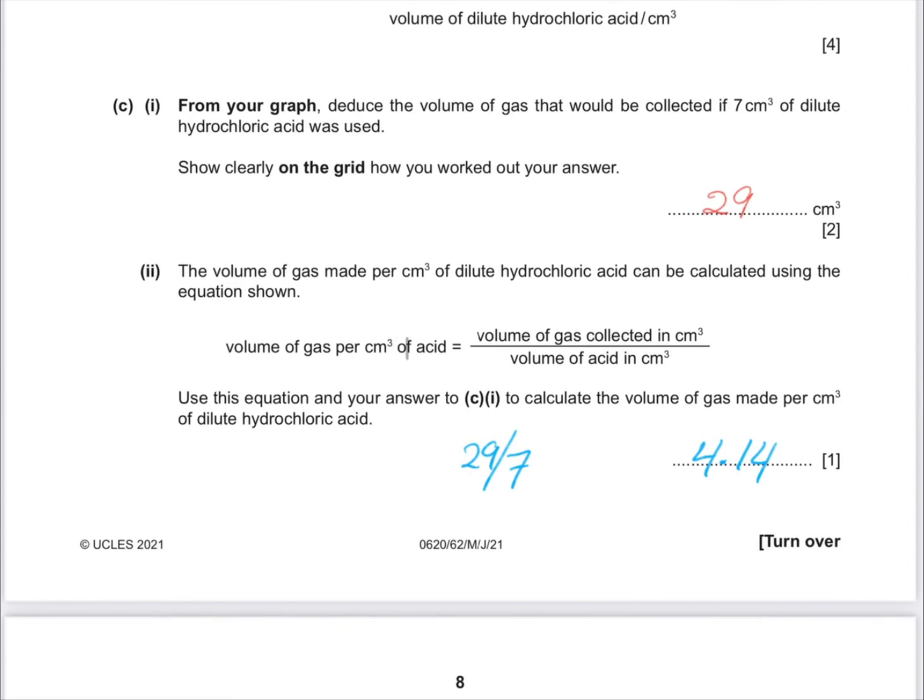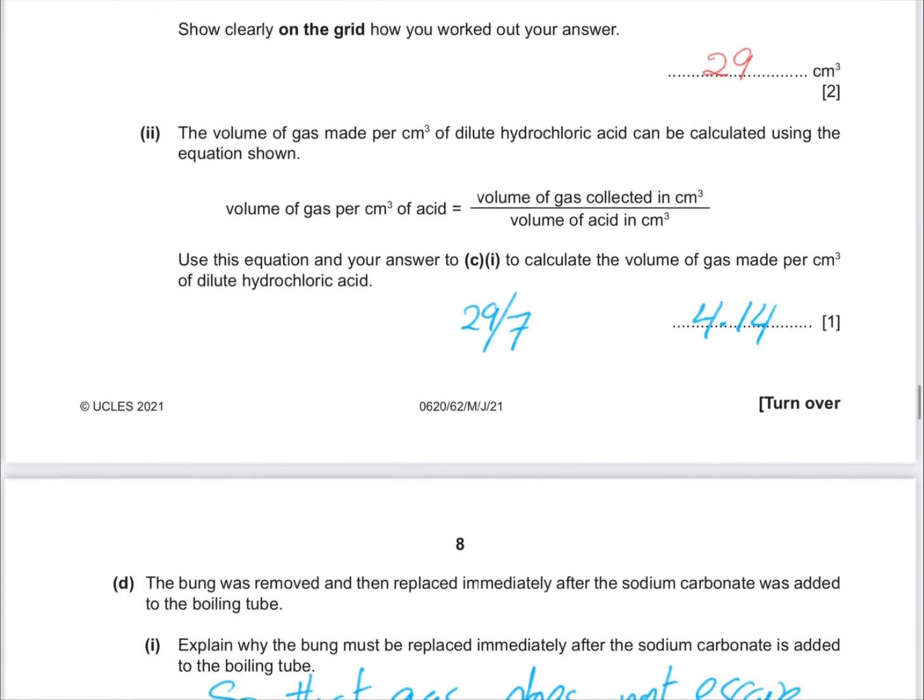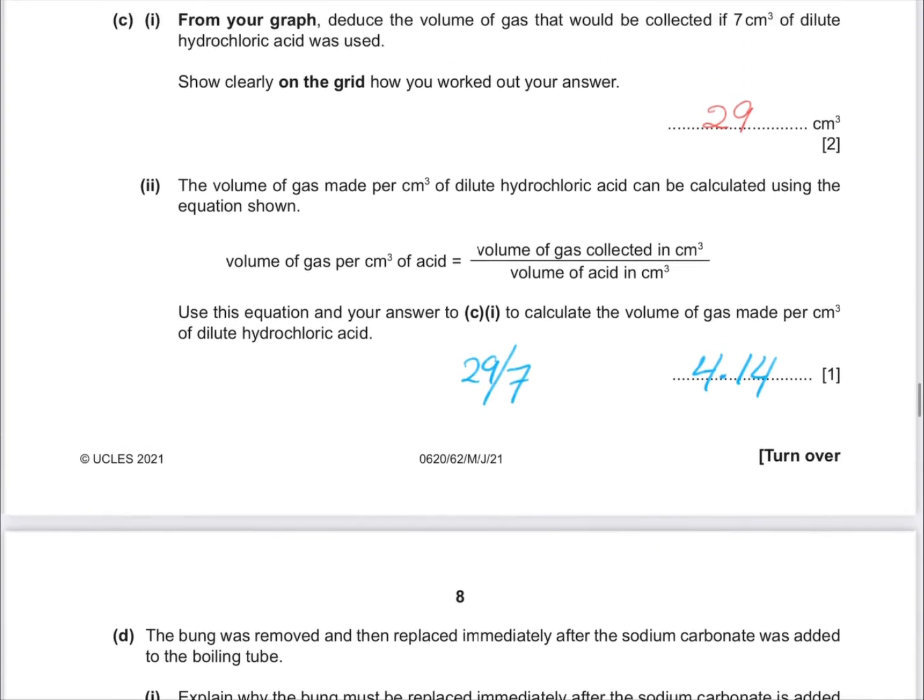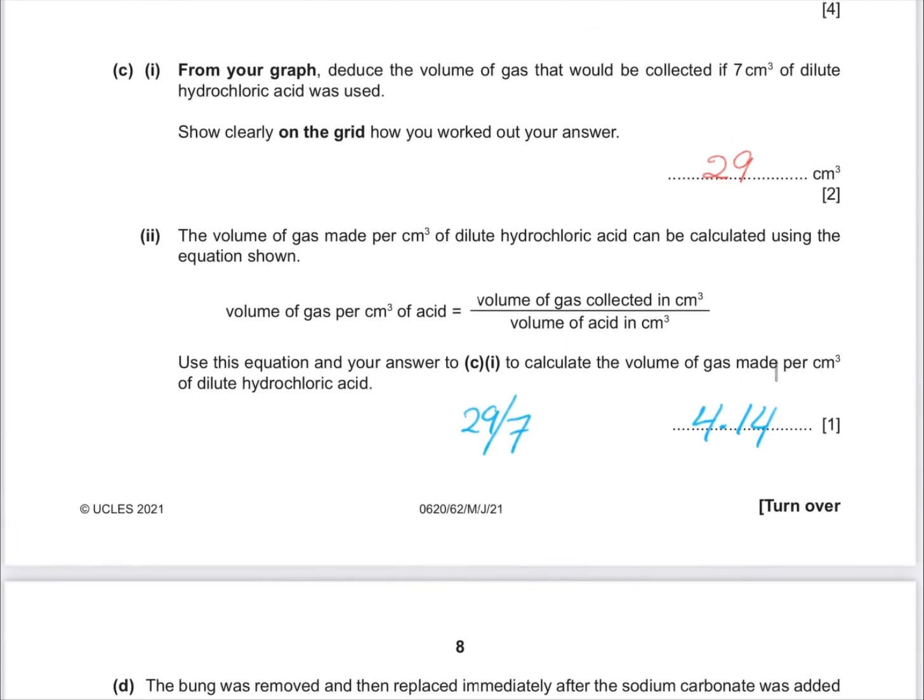The volume of gas collected can be calculated by the equation. I'll take the volume of gas collected divided by the volume of acid. Use the equation and the numbers that you see to calculate the volume of gas made per cubic centimeter. We saw it here, 29 divided by 7. This is 4.14.